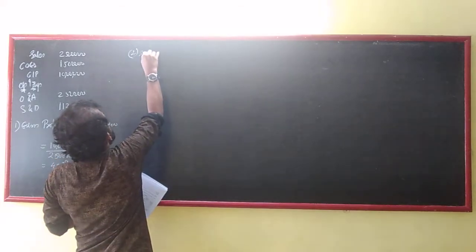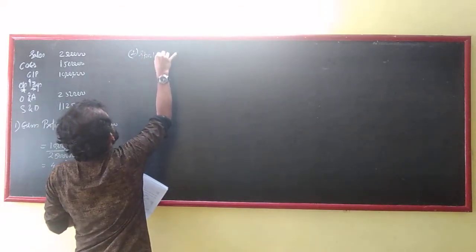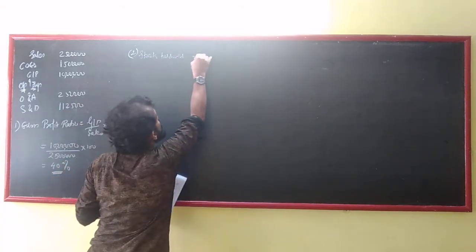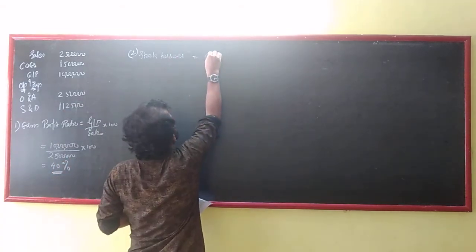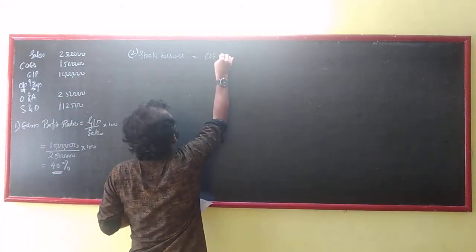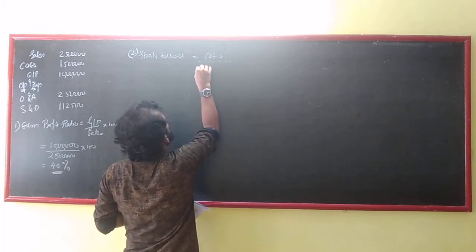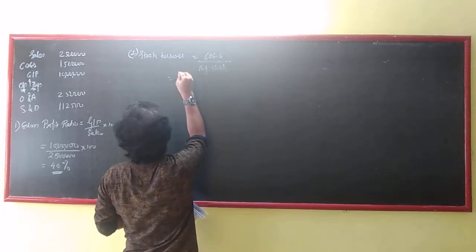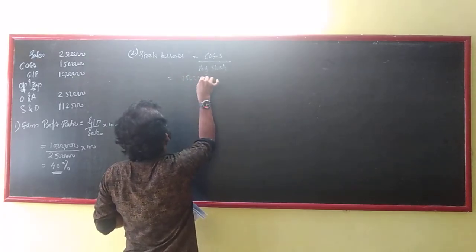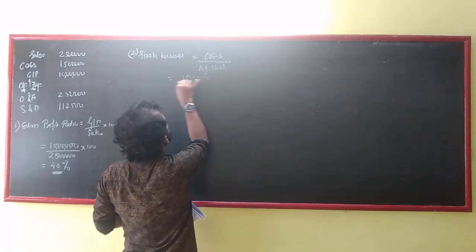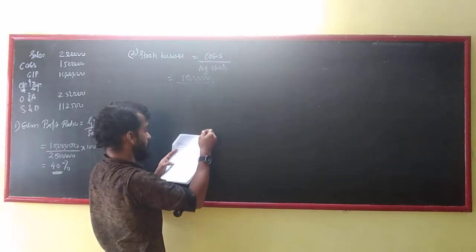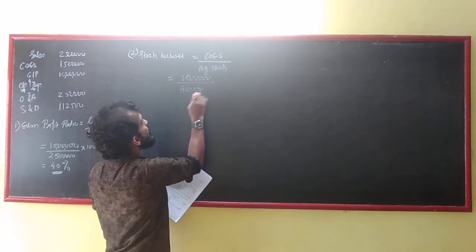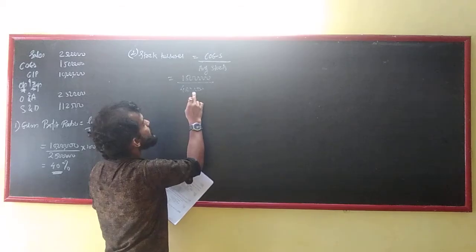Second is stock turnover ratio. Stock turnover ratio equals cost of goods sold upon average stock. Cost of goods sold is 15 lakhs. Average stock: opening stock is 4 lakhs, closing stock is 6 lakhs, divided by 2 equals 5 lakhs.